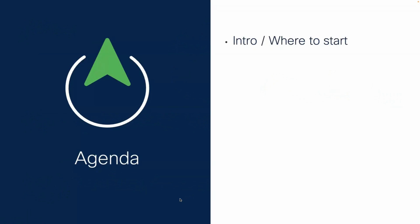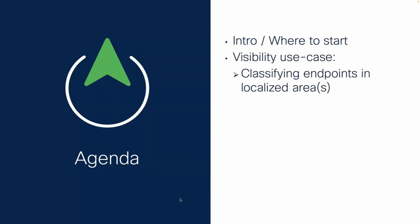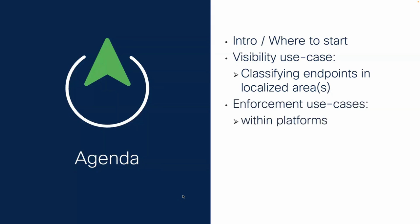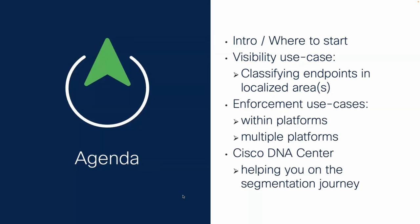As an agenda, I'm going to give a little bit of an introduction and concentrate on where to start on the segmentation journey, because I speak to several customers and they often say, how can we get started? I'll go on to some use cases. The first one is providing visibility without any extra configuration on your access devices. Other use cases involve enforcement — restricting communications from one device to another — first within a single platform, then across multiple platforms. And at the end, I'll talk about Cisco DNA Center and how it can help you on the segmentation journey.